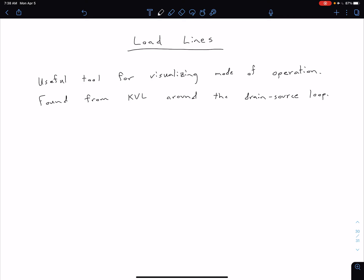The next thing we're going to look at are load lines, and just like we saw with our BJTs, for MOSFETs these can be a useful tool for visualizing the mode of operation. We're going to find these by doing KVL around our drain-source loop, similar to how we looked at our collector-emitter loop for our BJT.